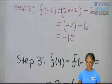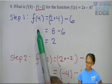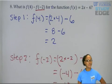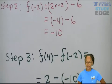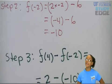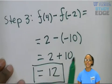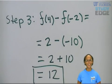And to do this, step 1, we found f(4). Step 2, we found f(-2). And then we combined them. We took f(4) minus f(-2) to find 12. I hope that was helpful.